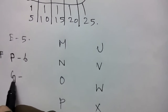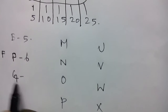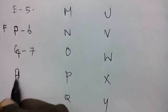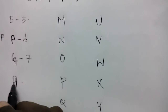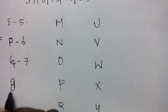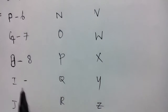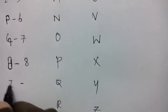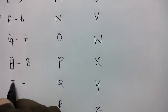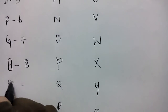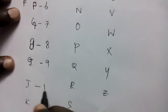For H: add a curve on top and a curve on the bottom of H, and it looks like 8 — so H is 8. For I: just add a curve to I and it looks like 9 — so I is 9. J is already in the E J O T Y formula, so J is 10.